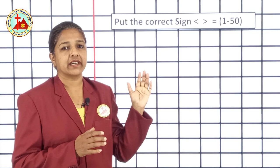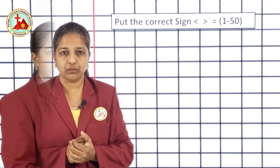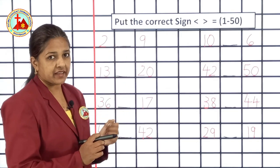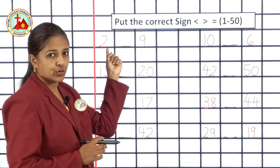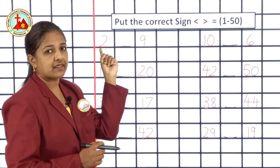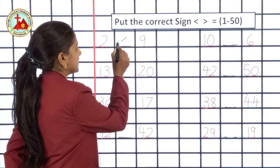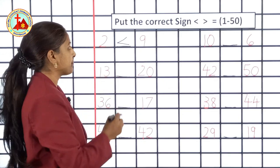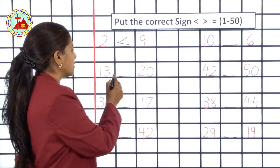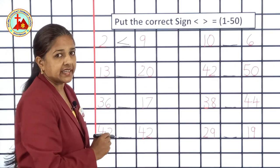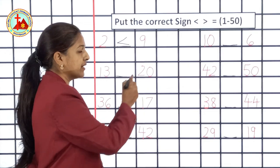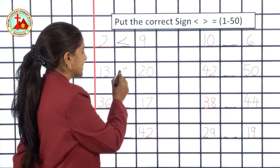We will practice to put the correct sign from numbers 1 to 50 in the square line book. Some numbers are written over here and we have to put the correct sign between the two numbers given. First number is 2 and second number is 9. 2 is lesser than 9, so lesser than sign — these two slanting lines, mouth is closed in the lesser than sign. Next number is 13 and 20. 13 is again lesser than number 20, so lesser than sign.